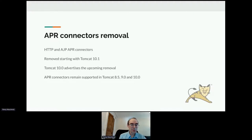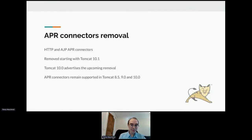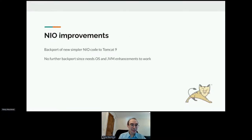In Tomcat 10.1 we've removed the APR connectors for HTTP and AJP. This makes things easier for us by removing components that are hard to support. We'll focus on NIO connectors and the OpenSSL support that goes along with NIO, but the full native APR connector will now be removed. The APR connectors were still supported in Tomcat 8.5, 9.0, and 10.0, so you'll be able to use them for quite a while. There was also a backport of simplified NIO code to Tomcat 9.0.